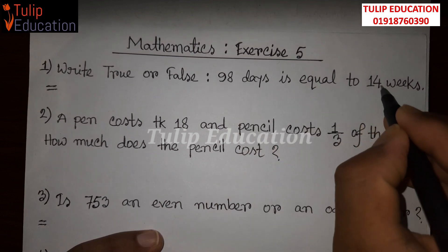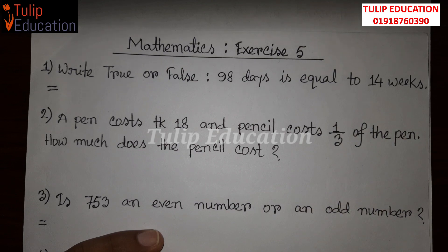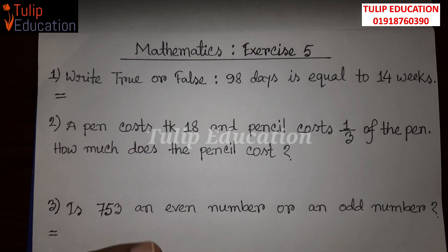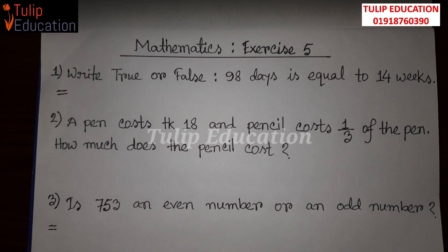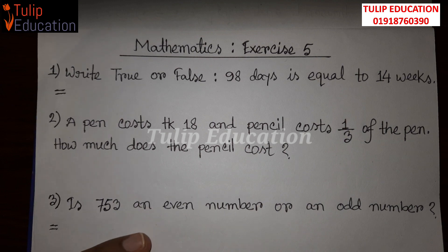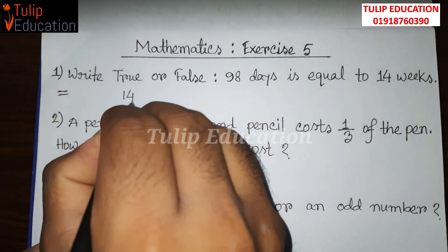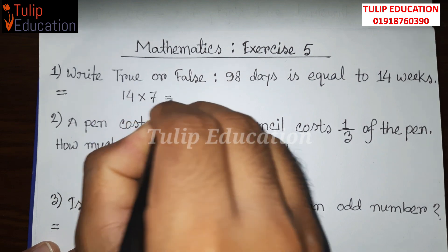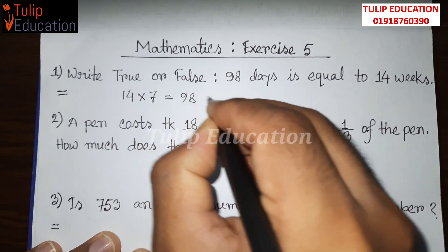First of all, one week is equal to 7 days. So, 14 weeks means 14 multiply 7, which ultimately gives the answer 98. So, 14 weeks multiplied by 7 equals 98 days.